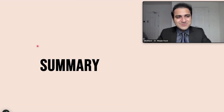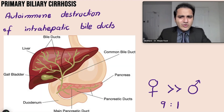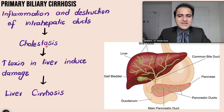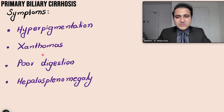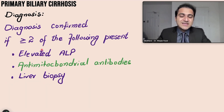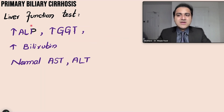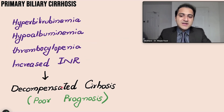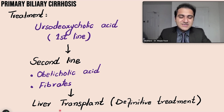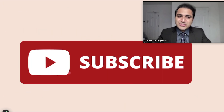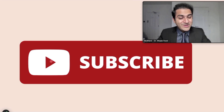In summary: primary biliary cirrhosis affects the liver through autoimmune destruction of intrahepatic bile ducts. Fatigue and pruritus — worst at night — are the most common symptoms, along with hyperpigmentation, xanthomas, and hepatosplenomegaly. Diagnosis requires two of three criteria. LFTs show a cholestatic pattern. Decompensated cirrhosis indicates poor prognosis and warrants liver transplant. Ursodeoxycholic acid is the first-line treatment, with liver transplant as the definitive option.